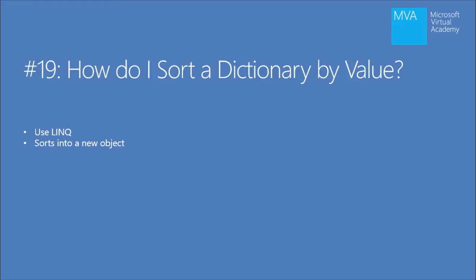So number 19, we have somebody who had asked a question on how do I sort a dictionary by the value that's in the dictionary itself. The interesting aspect of dictionary collections are that we deal with dictionaries as a key value pair — that's the type of collection that a dictionary is.